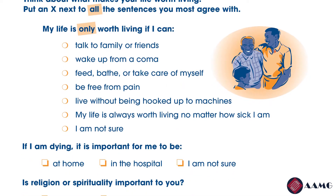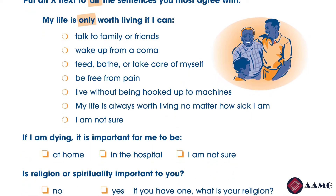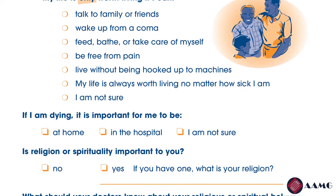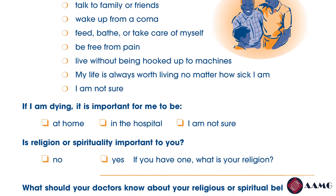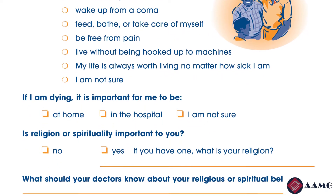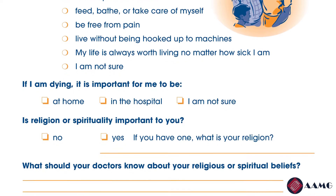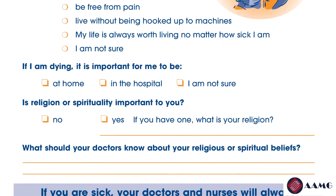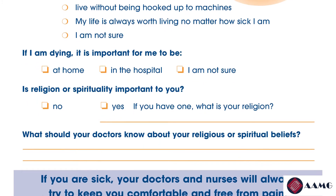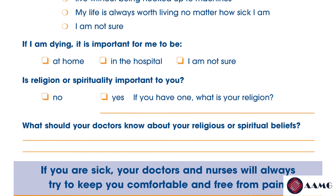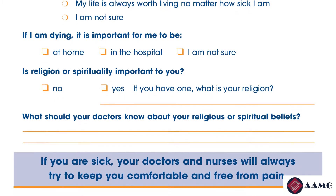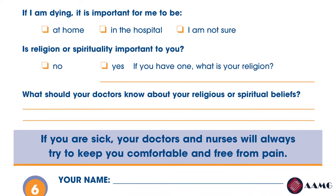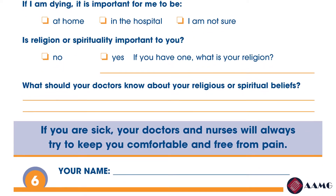These next few pages ask you to spend some time to reflect and think about what makes your life worth living. The first statement is: 'My life is only worth living if I can...' — mark an X next to all the sentences you most agree with. The second statement asks: 'If I am dying, it is important for me to be...' — mark either at home, in the hospital, or I am not sure. The third statement asks if religion or spirituality is important to you — a yes or no question. If yes, fill in your religion, and answer what your doctors should know about your religious or spiritual beliefs.